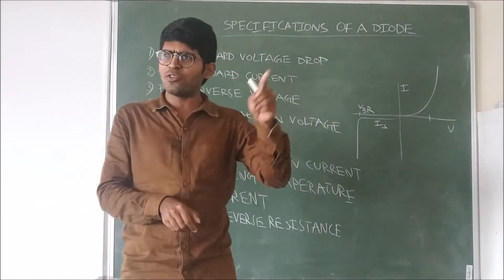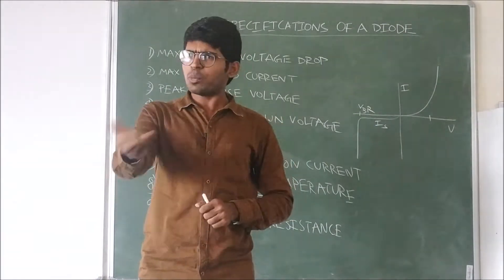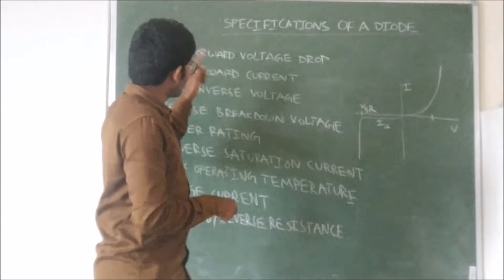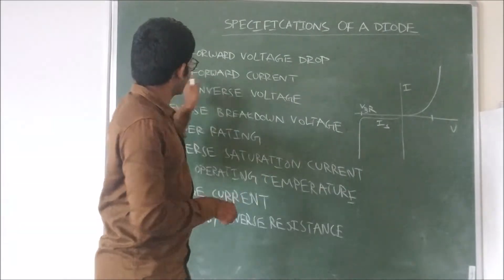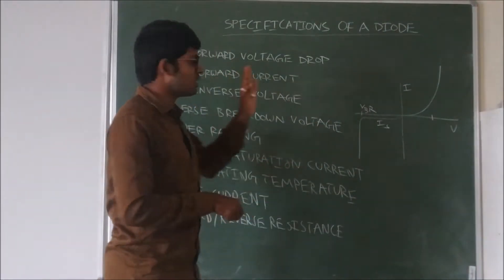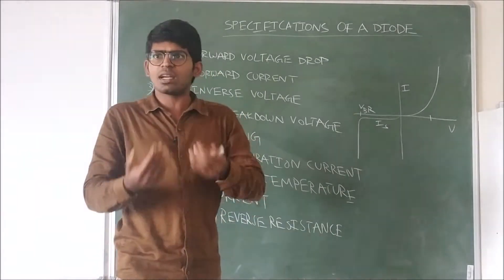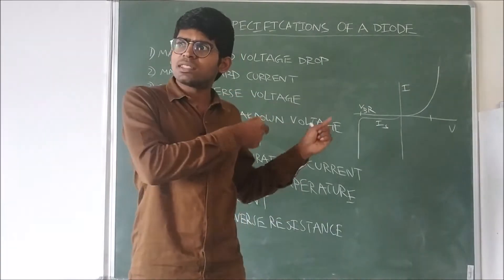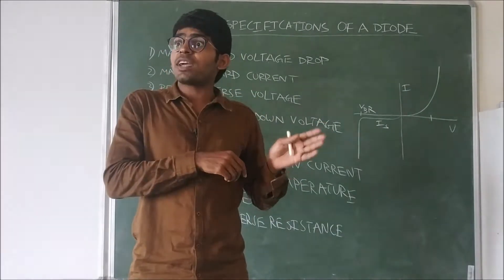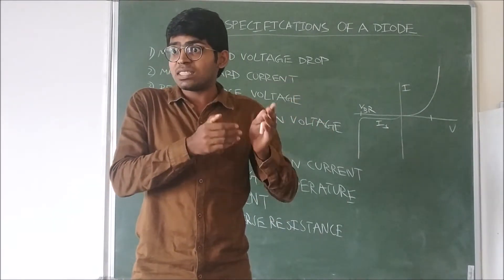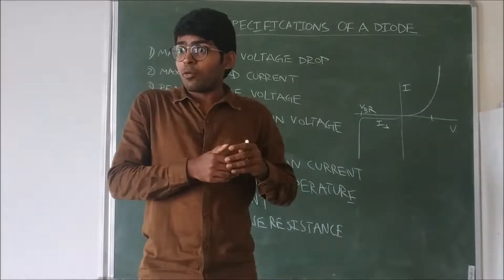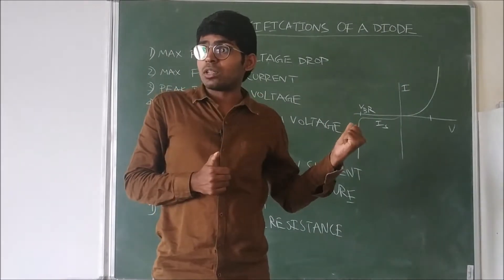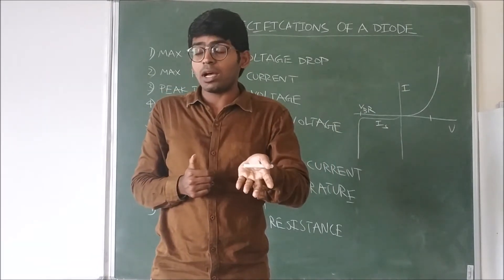So when you go to the manufacturer and ask, give me a diode — then he asks, which diode do you want? What is the forward voltage drop? What is the maximum forward current? What is the peak inverse voltage? So the manufacturer asks what requirements do you have, according to which the manufacturer makes the diode and sends it to the shops, from where we take the diode. This diode — generally we look into the data sheets.